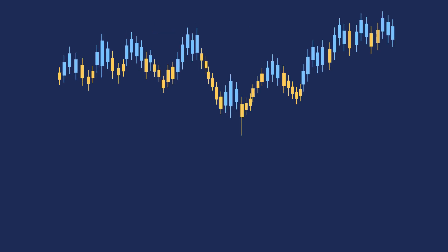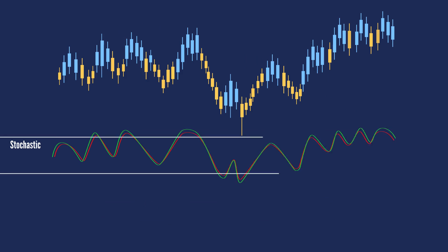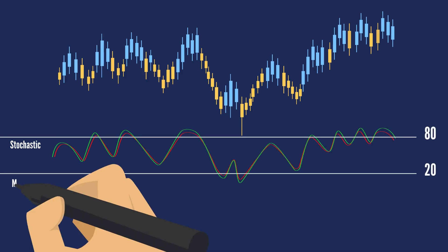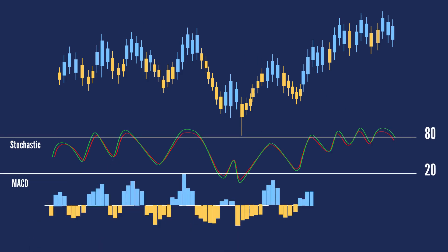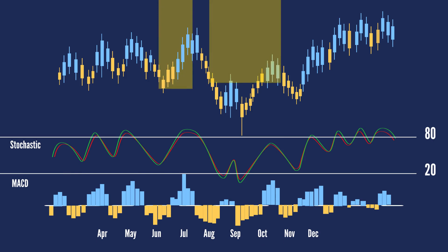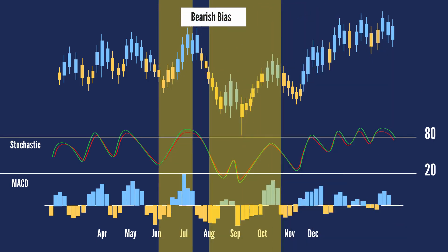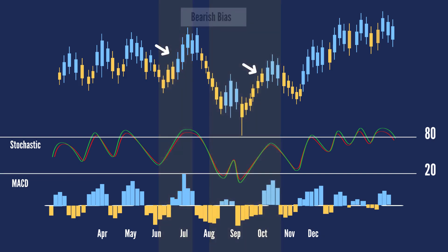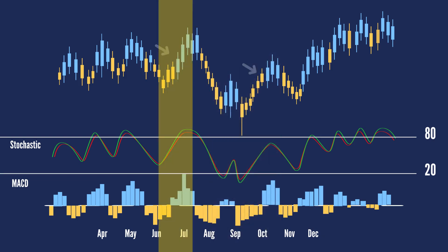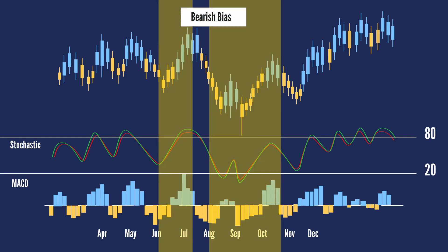Here is an example with six signals over a 12-month period. There were four different trading biases on this chart. The yellow areas mark two periods with a bearish trading bias. Bearish signals are ignored when the bias is bullish. On the contrary, bullish signals are ignored when the bias is bearish.